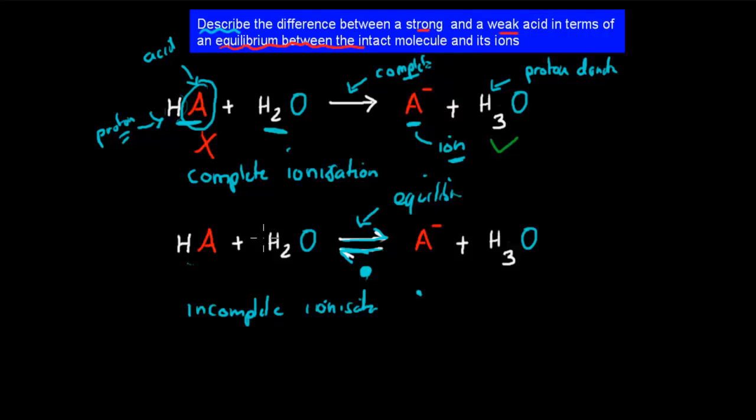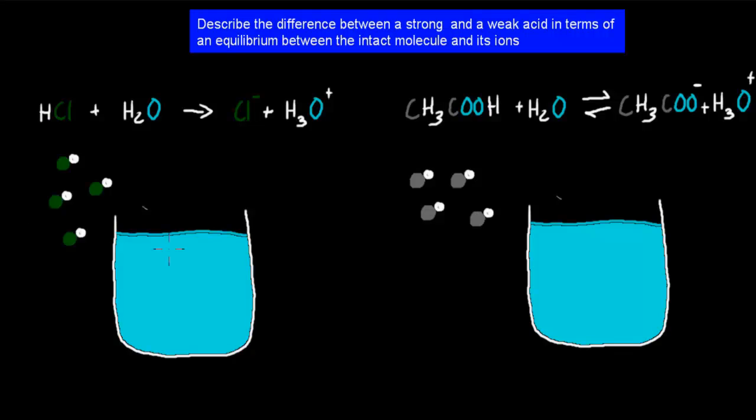Whereas for weak acids, there'll be some which are going to be still intact, so these original molecules, and some which will be the actual ions. And I'll go over that in more detail now. So let's just say, for example, we have hydrochloric acid.